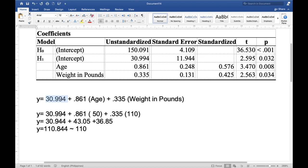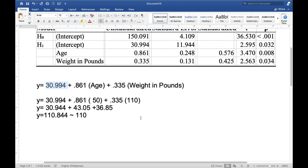0.861, this is the unstandardized beta estimate for your independent variable age. And 0.335 for your weight in pounds. Let us do a sample simulation. Suppose that our patient is 50 years old and the weight in pounds is 110. What would be the forecasted systolic blood pressure reading given the sets of figure?